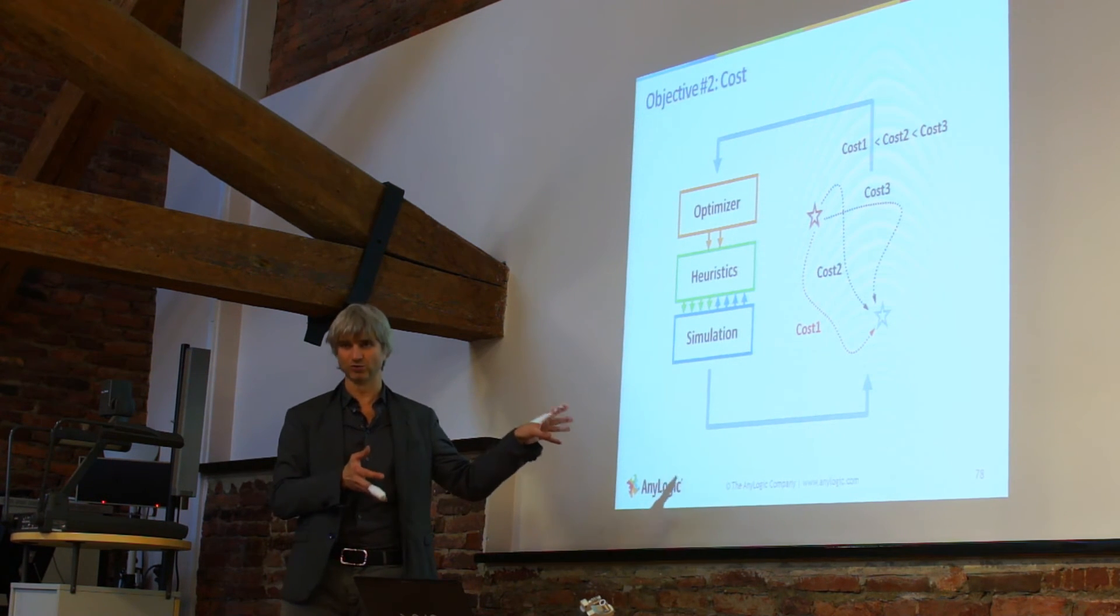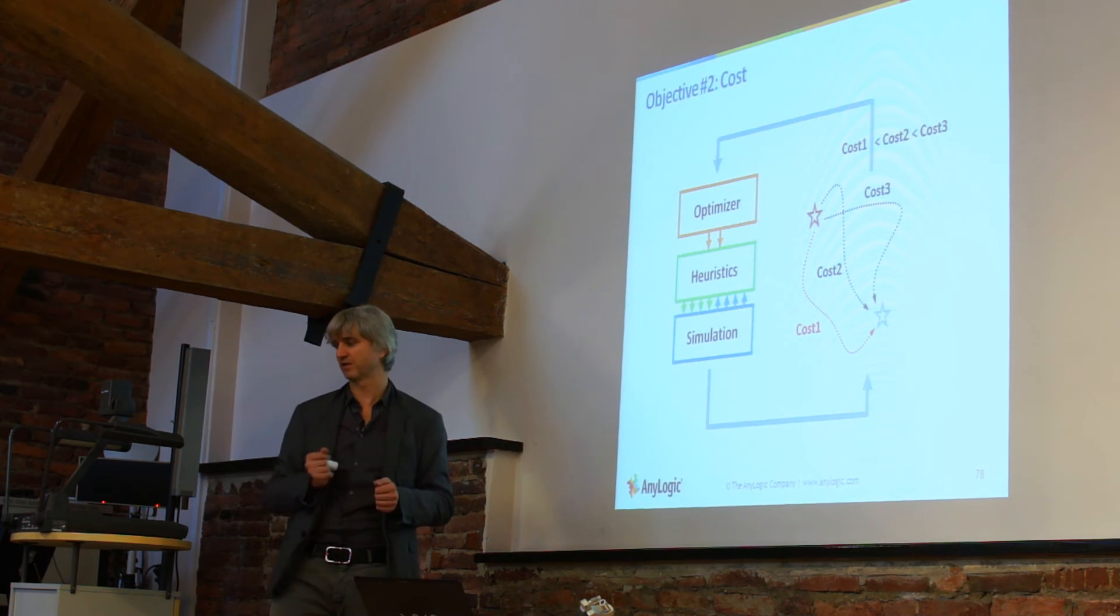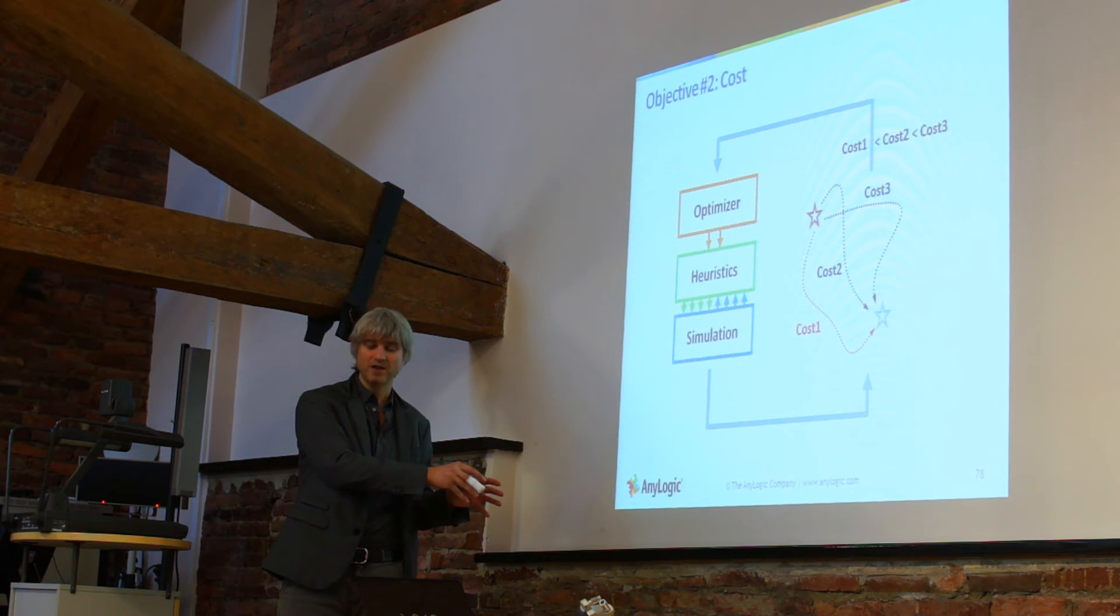So heuristics are simple rules based on common sense or experience. In this case, rules were related to where do we send the rail car that just got idle at a certain station. Maybe leave it there, or maybe send it to another.